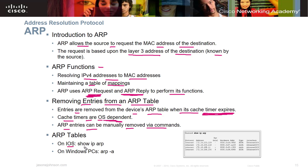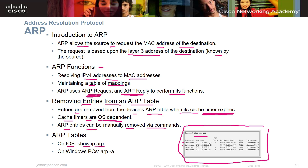On IOS, you can run 'show ip arp' to view the ARP table, which shows the protocol, address, hardware address, type (ARP), interface, and age — for example, nine minutes ago. On Windows, you can go to the command line and type 'arp -a' to see your ARP table. On Linux and Mac, similar commands are available.